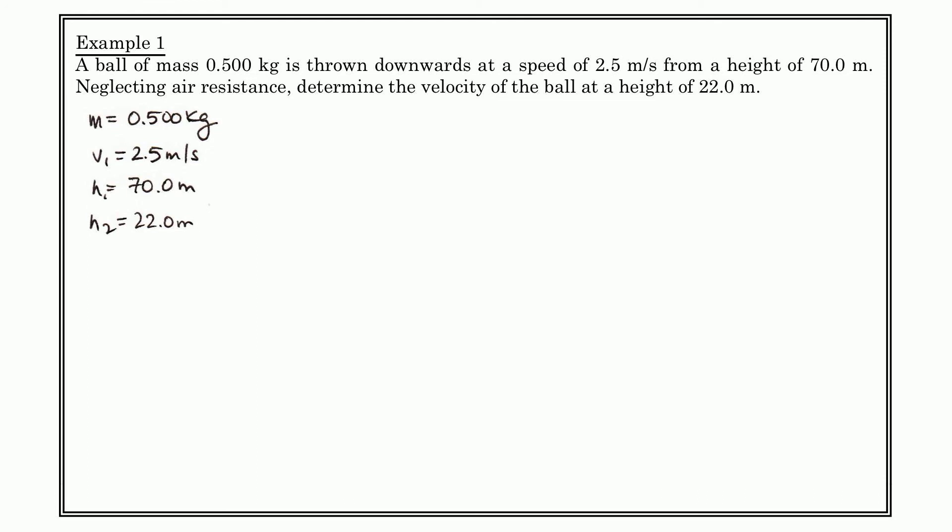So the way that we basically set this up is to observe what we have. We know we have mass, we've got v1, we've got height 1, we've got height 2. And so we would say that the energy that this system has initially is equal to the energy that it has finally.